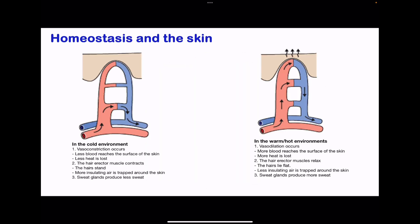Going on to homeostasis and the skin. In cold conditions, vasoconstriction is going to occur — this is the narrowing of the diameter of the blood vessels. When constriction occurs, less blood reaches the surface of the skin, so less heat is going to be lost from the body. Also, the hair erector muscles are going to contract and the hairs are going to stand; they will trap more insulating air around the skin, minimizing heat loss. And the sweat glands are going to produce less sweat so that less heat is lost. When in hot or warm environments, vasodilation is going to occur, meaning we need to lose more heat so the blood vessels become wider, so that more blood comes to the surface of the skin and more heat is going to be lost. The hair erector muscles are going to relax and the hairs are going to lie flat, to prevent trapping insulating air closer to the surface of the skin. And the sweat glands are going to produce more sweat, so that more heat is lost from the body, in order to return the body conditions to normal.